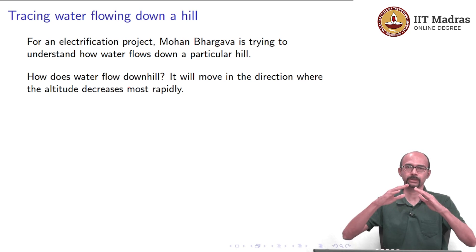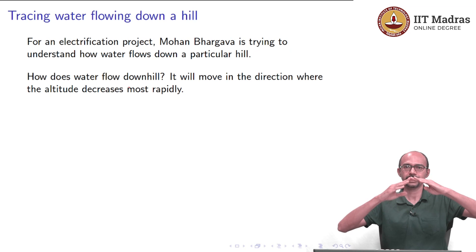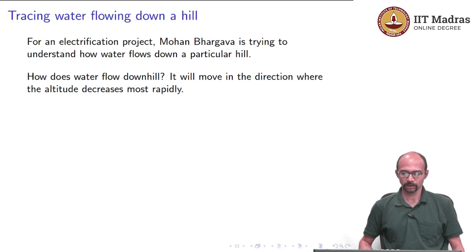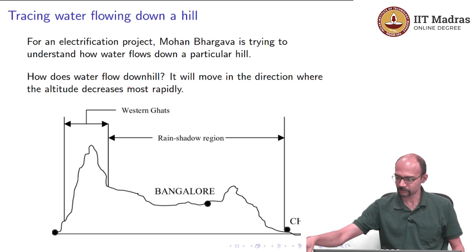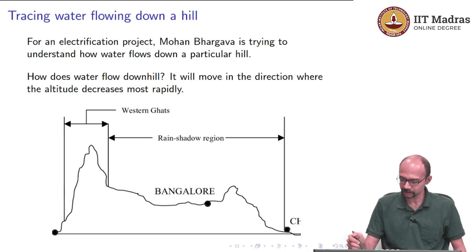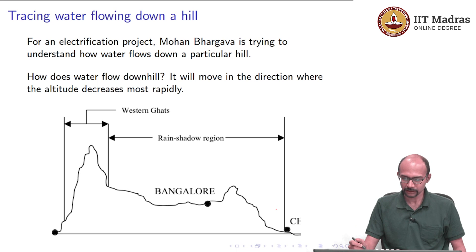If you have a rock face, water is going to flow down where the descent is most rapid. Here is a cross section of the Deccan plateau around Bangalore and Chennai. You can see Bangalore in the middle, Chennai at very close to sea level on the right, the Western Ghats on the left, and a steep downfall toward Chennai.